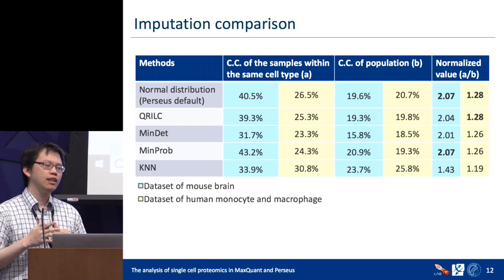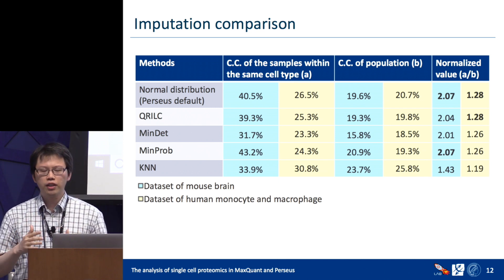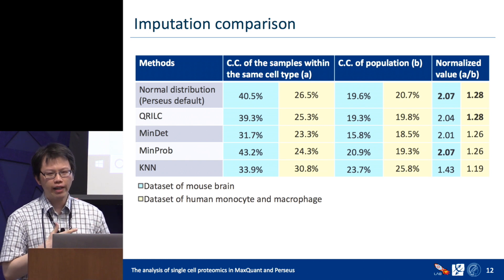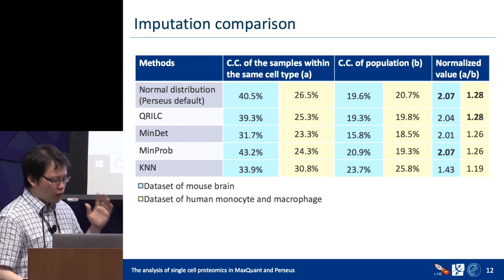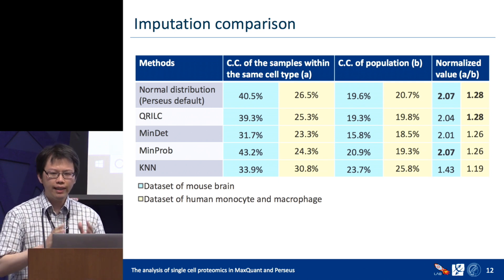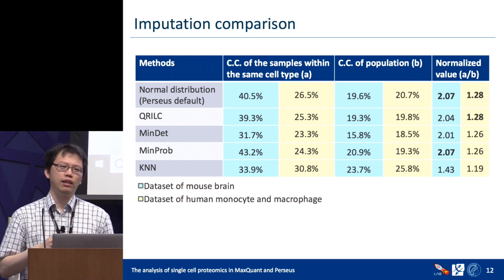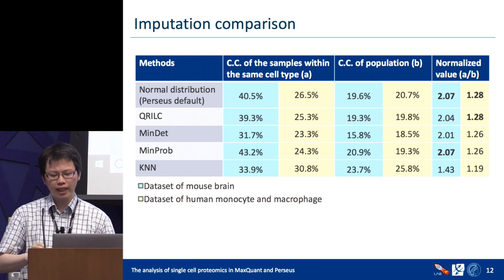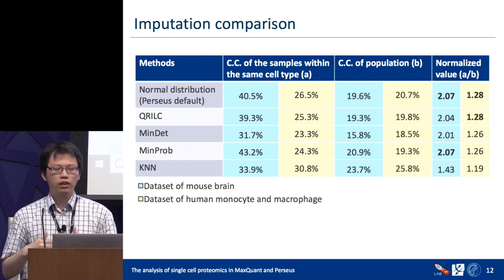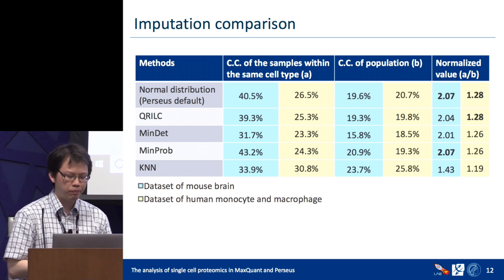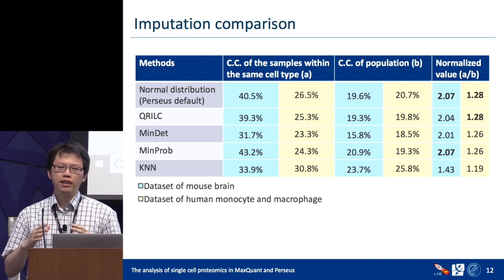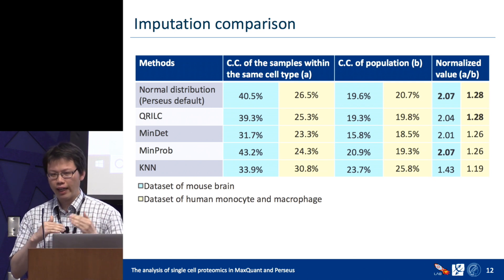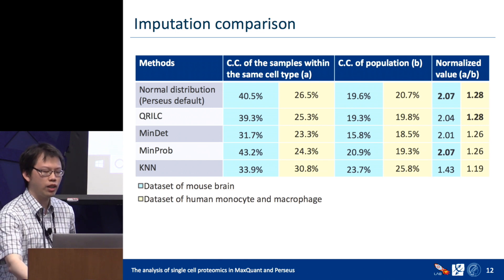Single-cell proteomics data contains a lot of missing values, so a good imputation method may help the data analysis. We tried different imputation methods and compared them by calculating the correlation coefficient of samples within the same cell types and normalizing by the correlation of the whole population. A higher ratio means the imputation method works better. Perseus's default imputation by normal distribution works slightly better than other methods, but the difference is small — it's also based on your dataset, so you can choose which one to use.